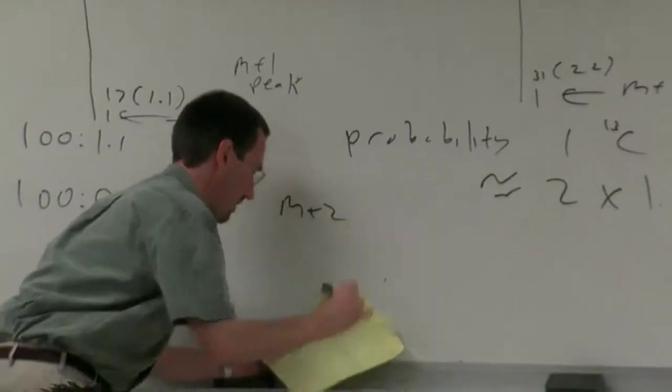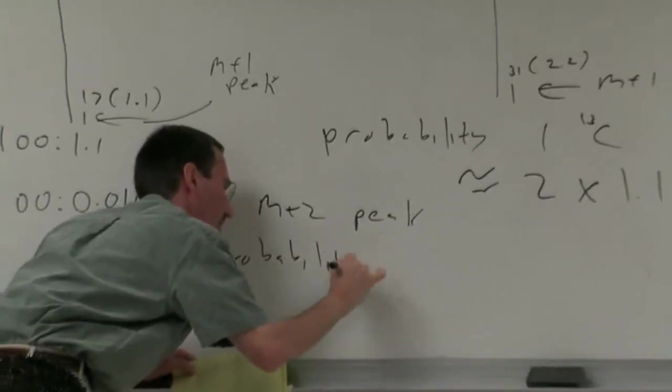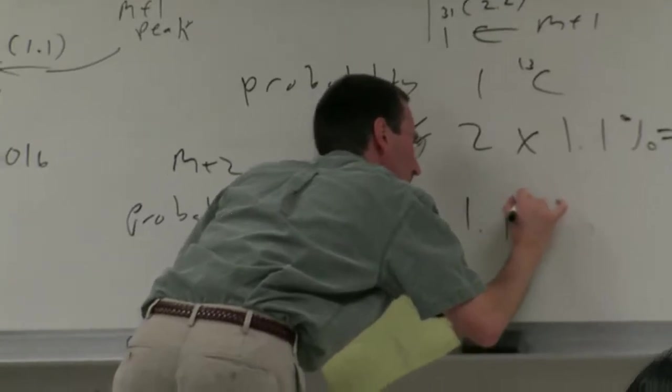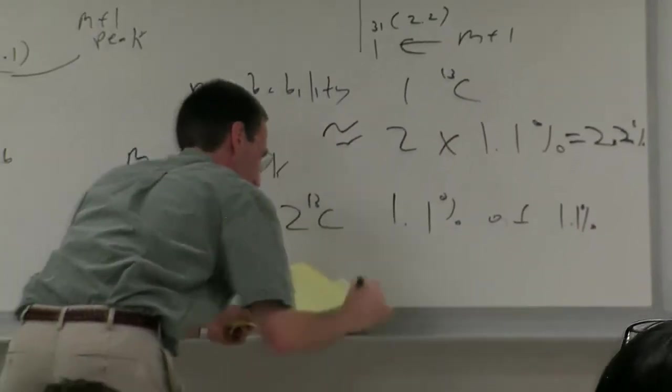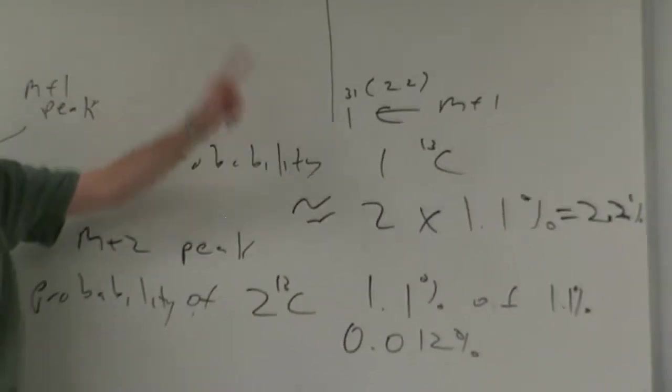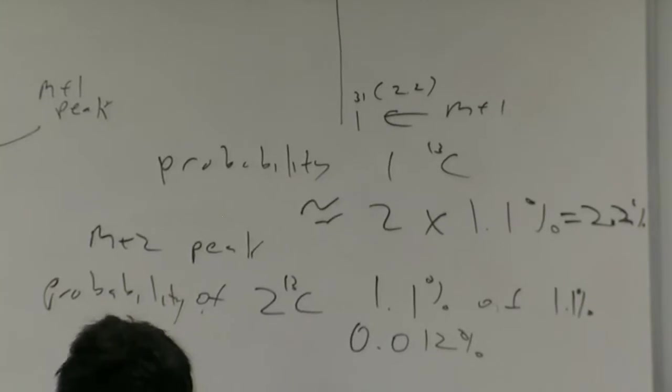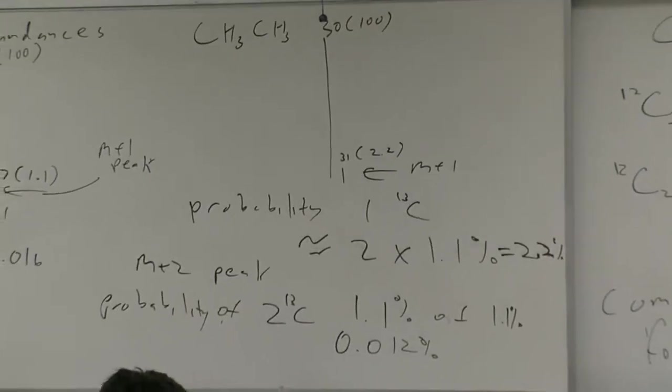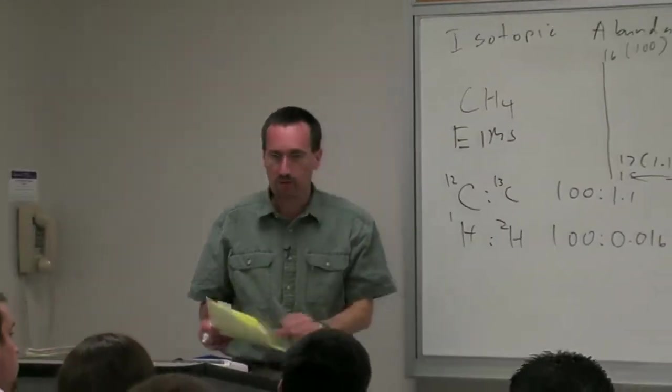That's your M plus 1 peak. The probability of 1 C13 in your molecule is approximately equal to 2 times 1.1 percent or 2.2 percent. Now a minuscule number of your molecules have two C13s. Your M plus 2 peak would come from the probability of two C13s, which is 1.1 percent of 1.1 percent, which is 0.012 percent. For a two carbon molecule you're not going to see an M plus 2 peak.